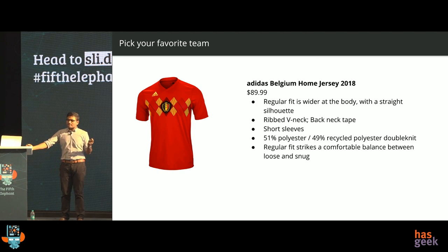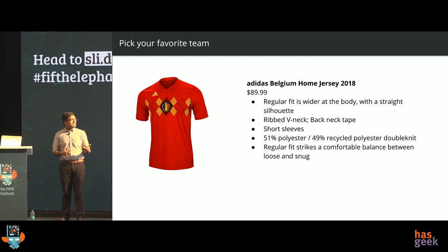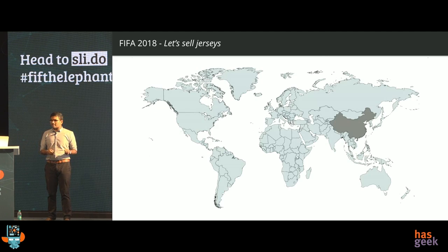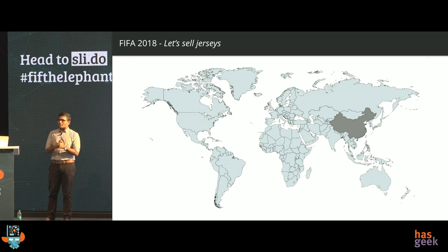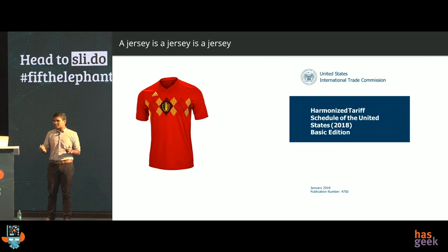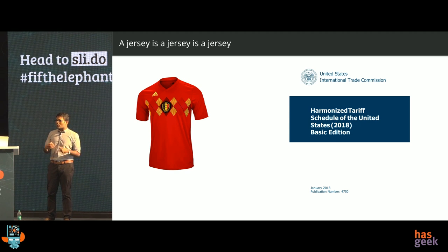The interesting part is that you make these jerseys and they come with their own set of features. For this use case it's mostly the more abstract part: 51% polyester, 49% recycled polyester, and double knit. The idea is that you go to China, where apparently everything is made these days, and you decide you're going to buy a lot of these jerseys and sell them across the world — in all the countries that take part — and one of them that didn't make the cut this year was the United States.